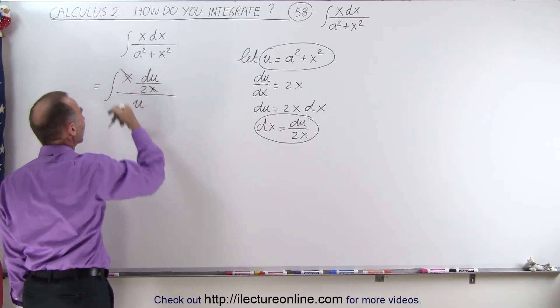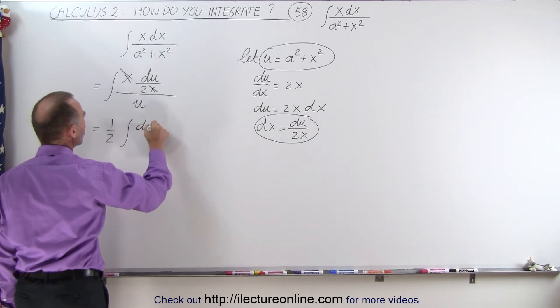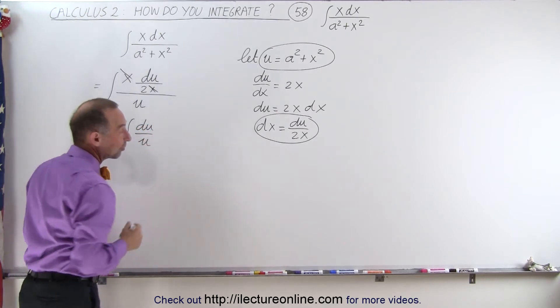notice that this x will cancel out this x, and the 1 over 2 can be taken out of the integral sign, so this becomes 1 half times the integral of du over u. And of course, that's easier to integrate.